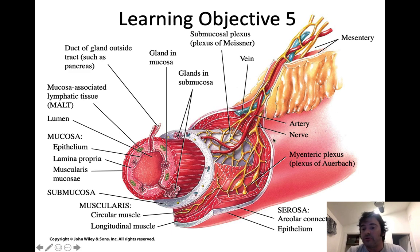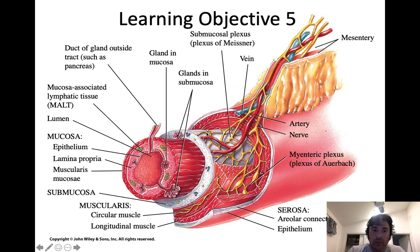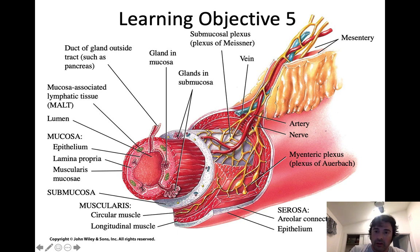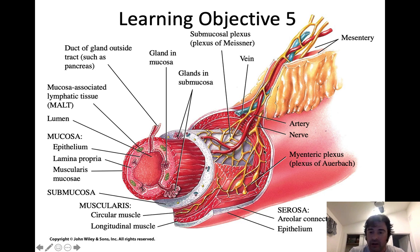With respect to the nerve plexuses, you have the submucosal plexus, which regulates the activity of glands in the submucosa — essentially upregulating them so they produce more mucus. The myenteric plexus — 'myo' meaning muscle and 'enteric' meaning intestines — actually regulates the activity of the smooth muscle. When the myenteric plexus activates, you get increased motility or contraction of the smooth muscle here, which propels material through the GI tract.